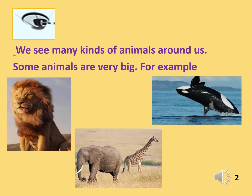As you already know, we see many kinds of animals around us. Now I will teach you the types of animals according to their size. Some animals are very big. For example, a lion, an elephant, a giraffe and a whale.